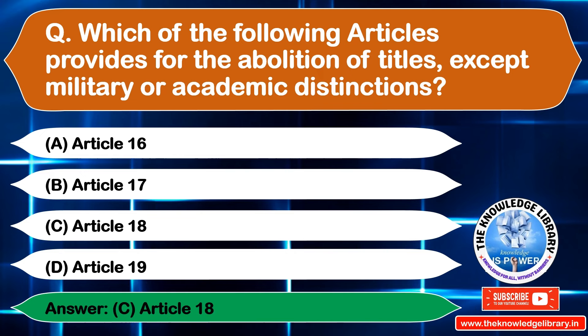The next question is: right against self-incrimination is provided under which article? Option A: Article 19, Option B: Article 20, Option C: Article 21, Option D: Article 22. The correct answer is Option B: Article 20.